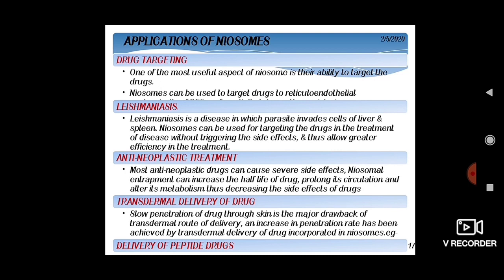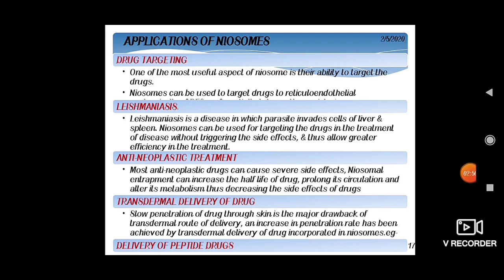Transdermal drug delivery: Niosomes are used to overcome the slow penetration of drugs through skin with fewer side effects. Anti-neoplastic treatment: Niosomal entrapment can increase the drug's half-life, prolong its circulation, and alter its metabolism, reducing side effects. In oral drug delivery, niosomal formulations show increased gastrointestinal absorption, protection from proteolytic enzymes, and good stability. For cosmetics and skincare, Niosomes provide increased stability, improved bioavailability of poorly absorbed ingredients, and enhanced skin penetration. Administration routes include oral, ocular, transdermal, and vaginal.